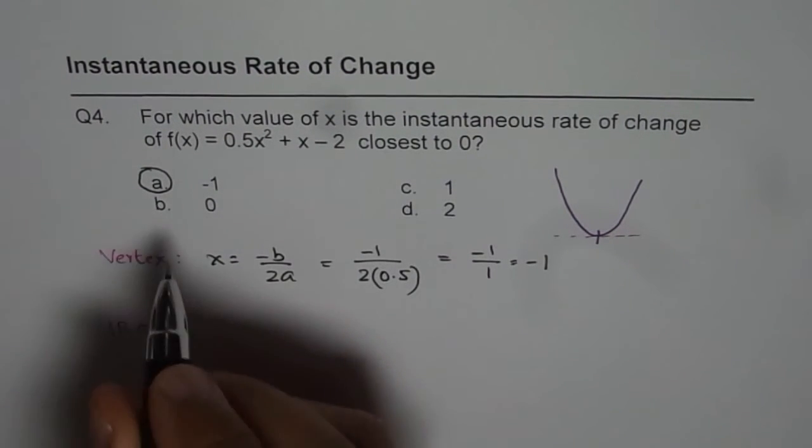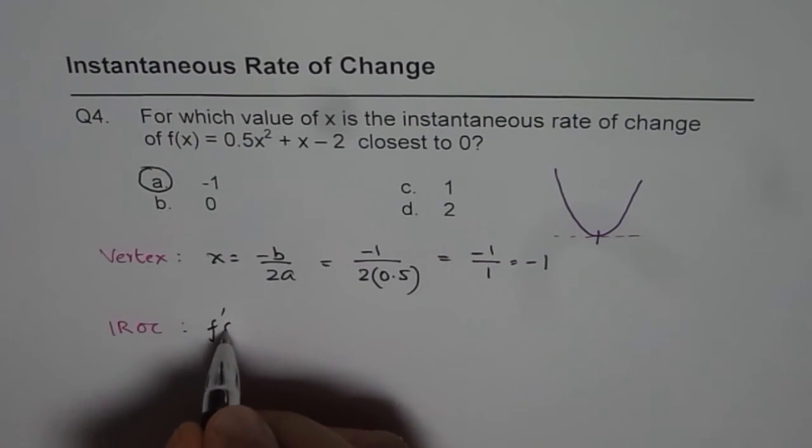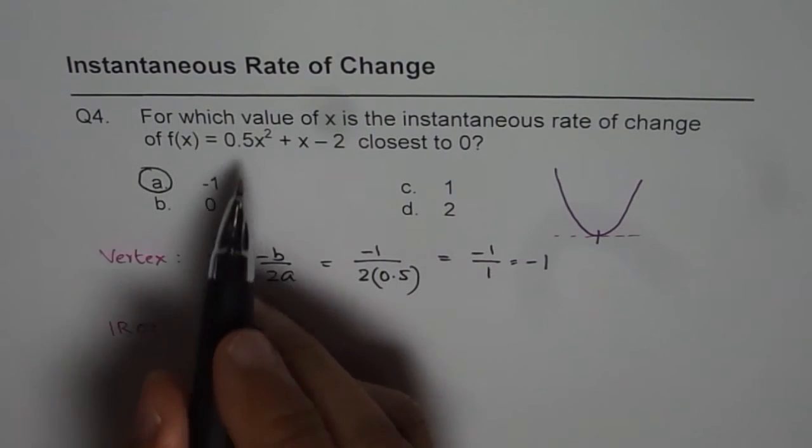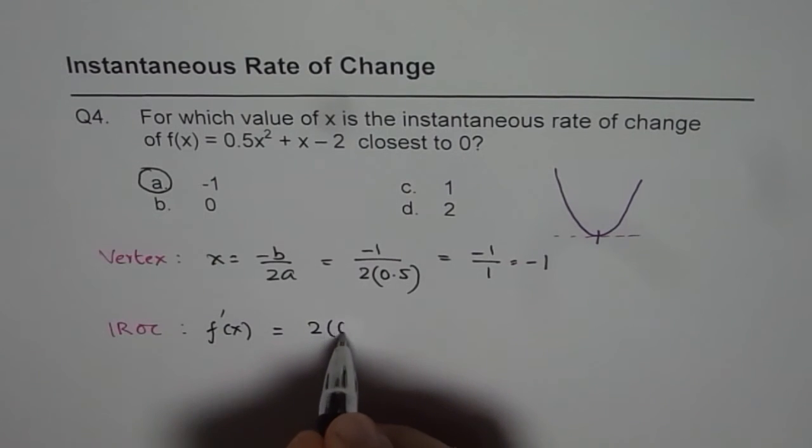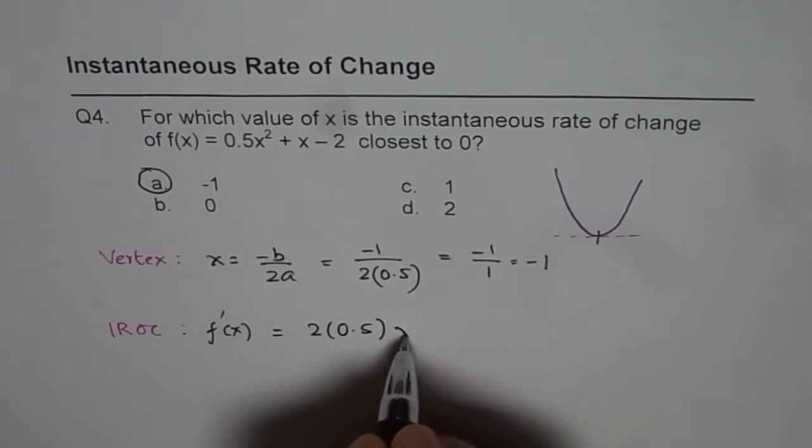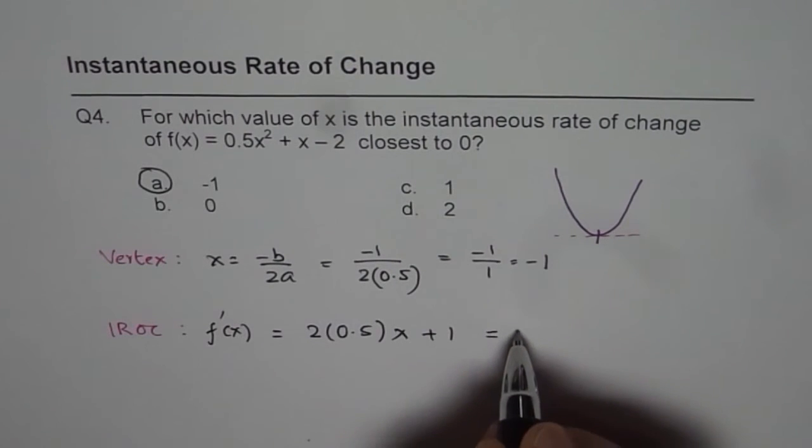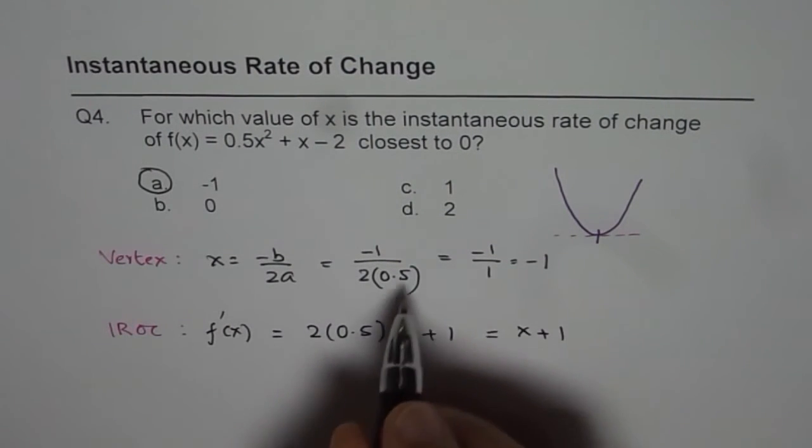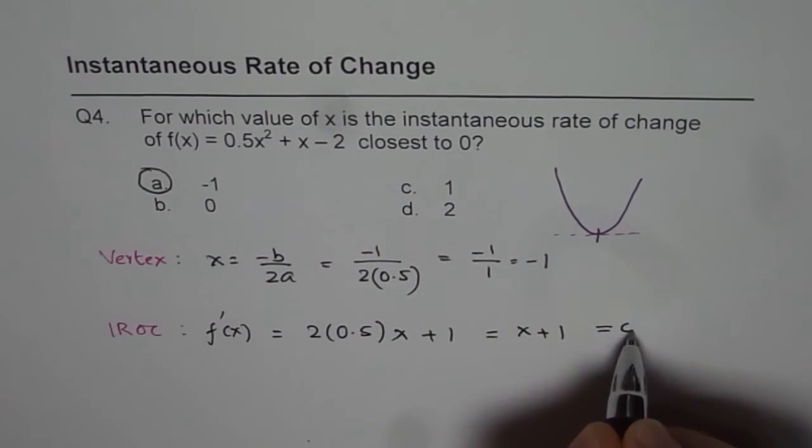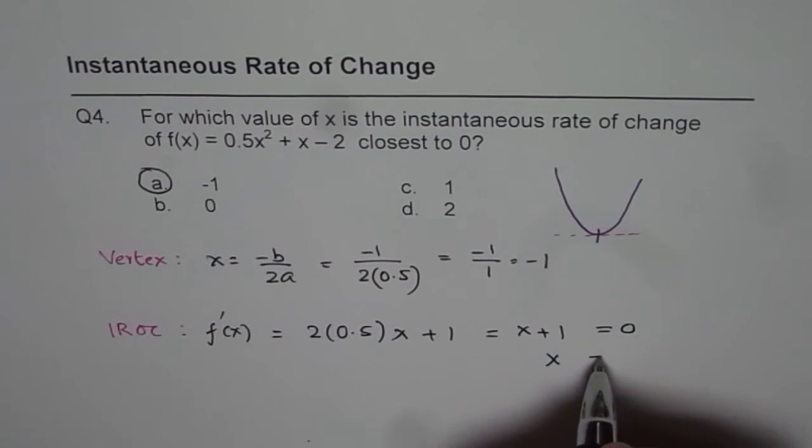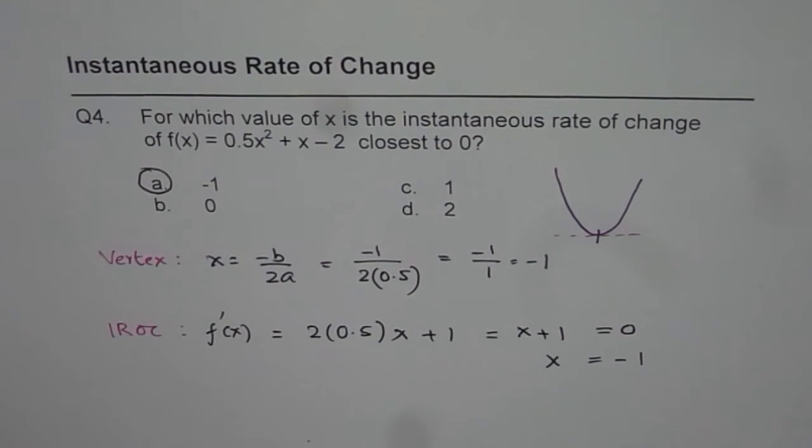But you know instantaneous rate of change for this function, I could write this as f'(x) is actually equals to 2 times 0.5x plus 1 and that is equals to x + 1 and we want this to be closest to 0. That gives you a value of x equals to -1.